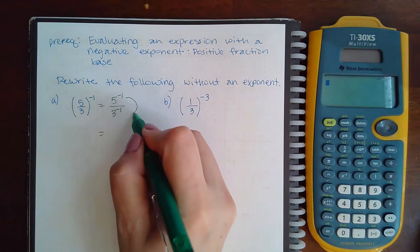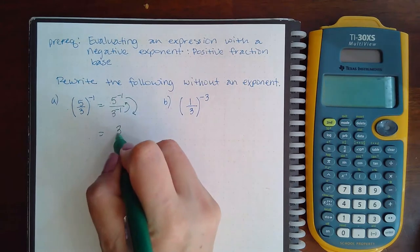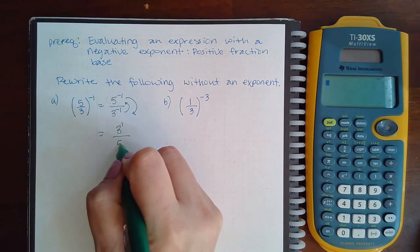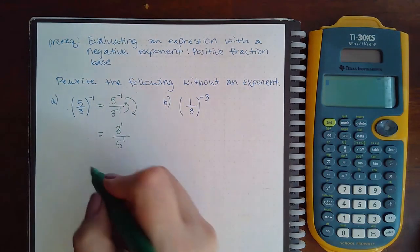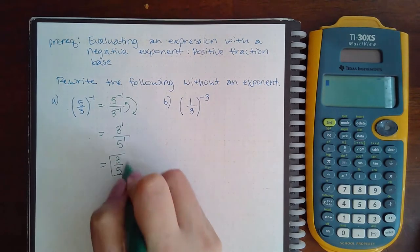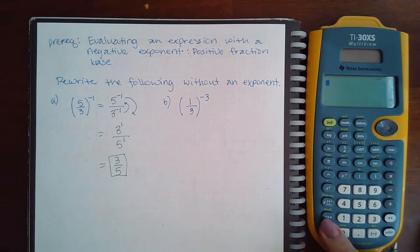This one's gonna go downstairs and this one's gonna go upstairs. You get 3 to the positive 1 upstairs and 5 to the positive 1 downstairs, which is just 3 over 5. Again, the calculator can do this for you if you type it in exactly the way it looks on the paper.